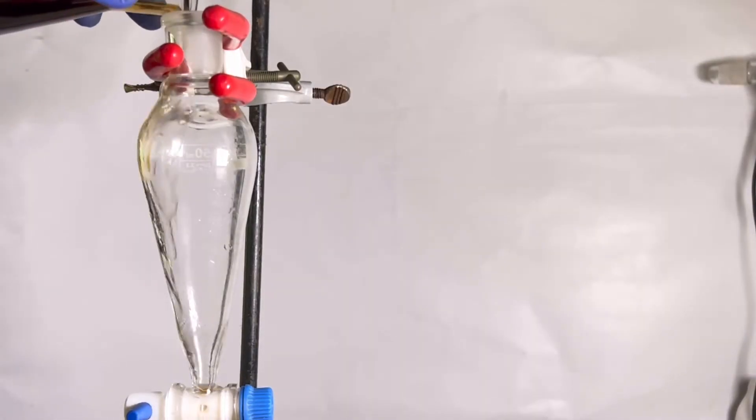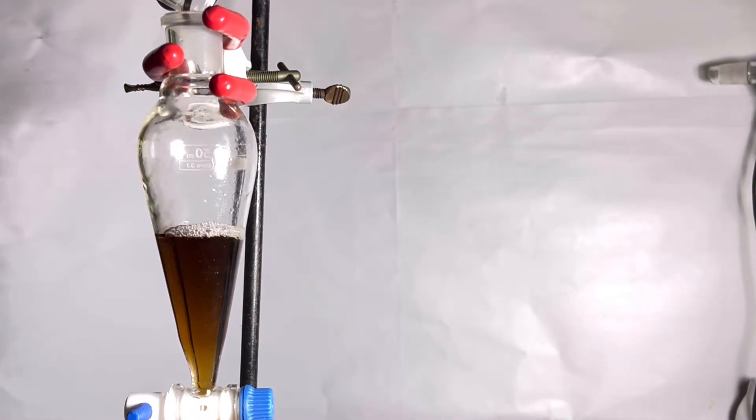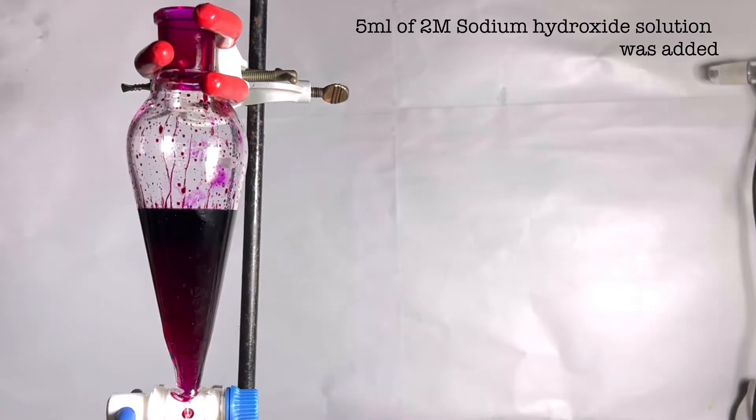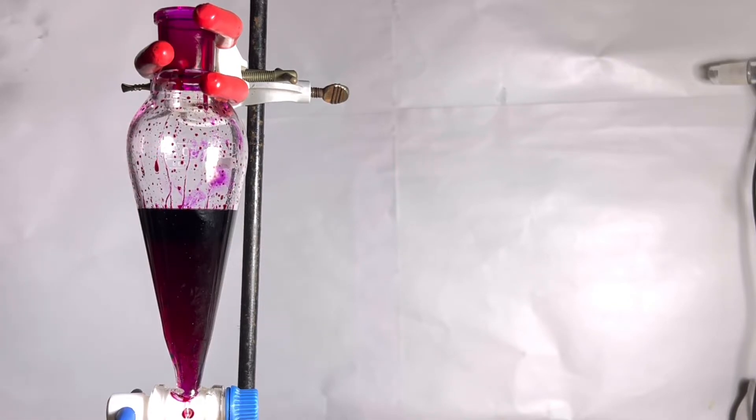Now the combined organic layer is transferred to a separatory funnel. 5 ml of 2 molar solution of sodium hydroxide was added to the dichloromethane in the separatory funnel. Immediately the sodium hydroxide layer turns deep purple in color. This is because in sodium hydroxide, phenolphthalein exists as its water-soluble salt form which has this characteristic purple color. Also it has more affinity in the aqueous phase than in the dichloromethane. So it comes into the top aqueous layer.